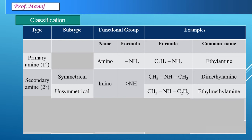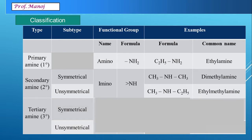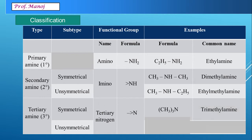We have taken examples of only alkyl groups, but you can think of examples with aromatic rings also. The third type is called tertiary amine, also divided as symmetrical and unsymmetrical, generally known as tertiary nitrogen — a nitrogen with three bonds. Examples are (CH3)3N, which is trimethyl amine, or (CH3)2N–C2H5, which is ethyl dimethyl amine. In unsymmetrical tertiary amines, all three groups can also be different.